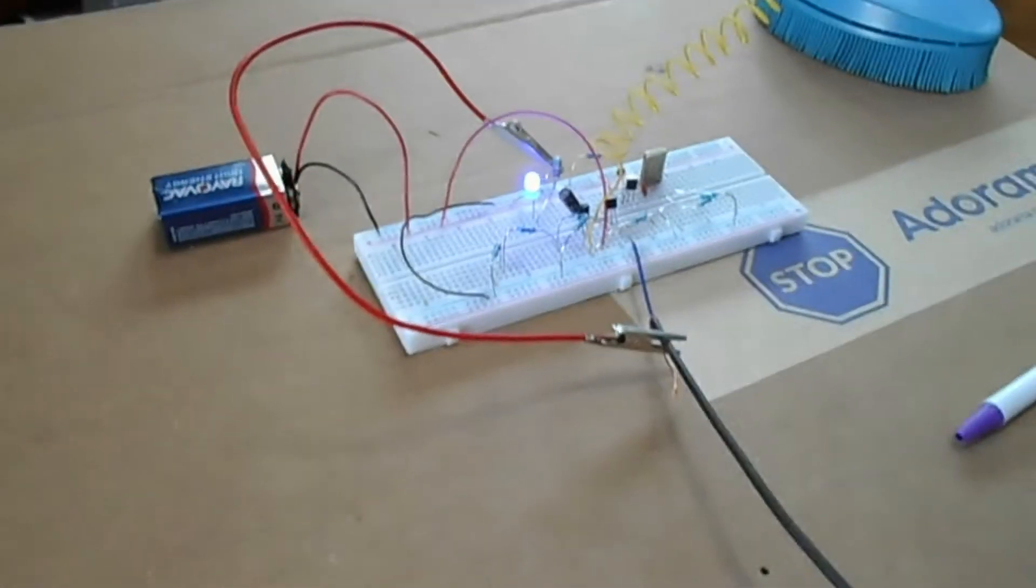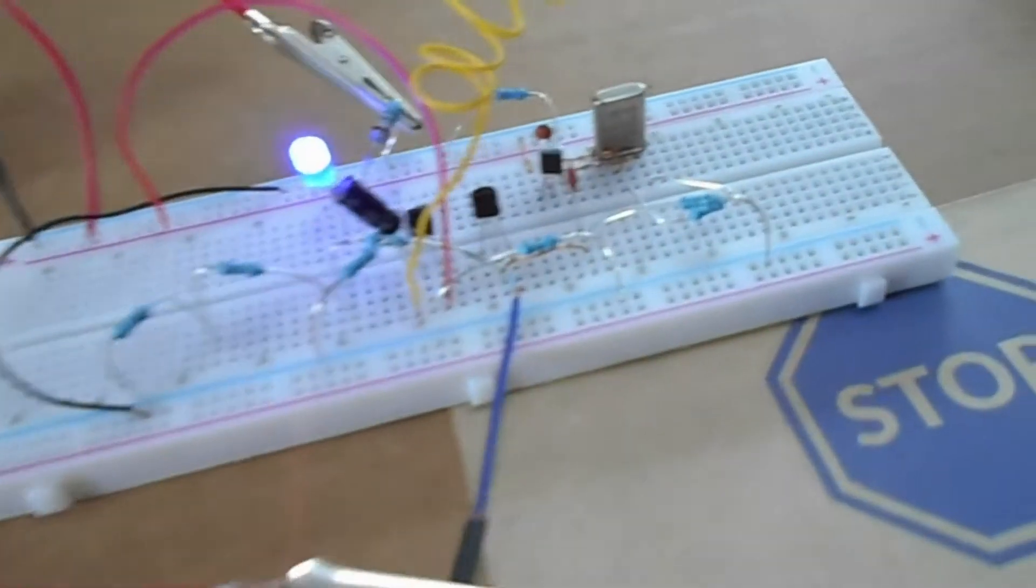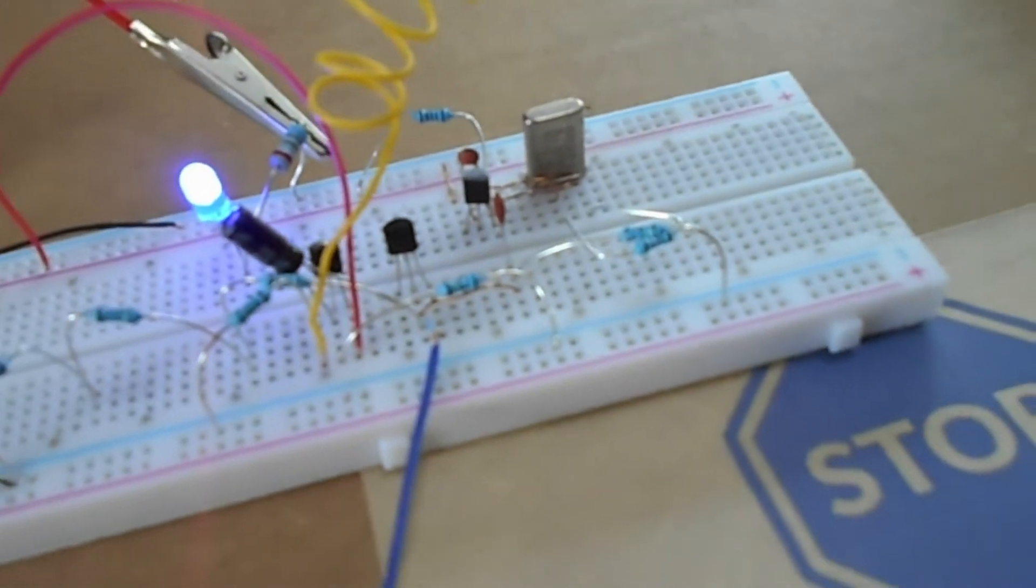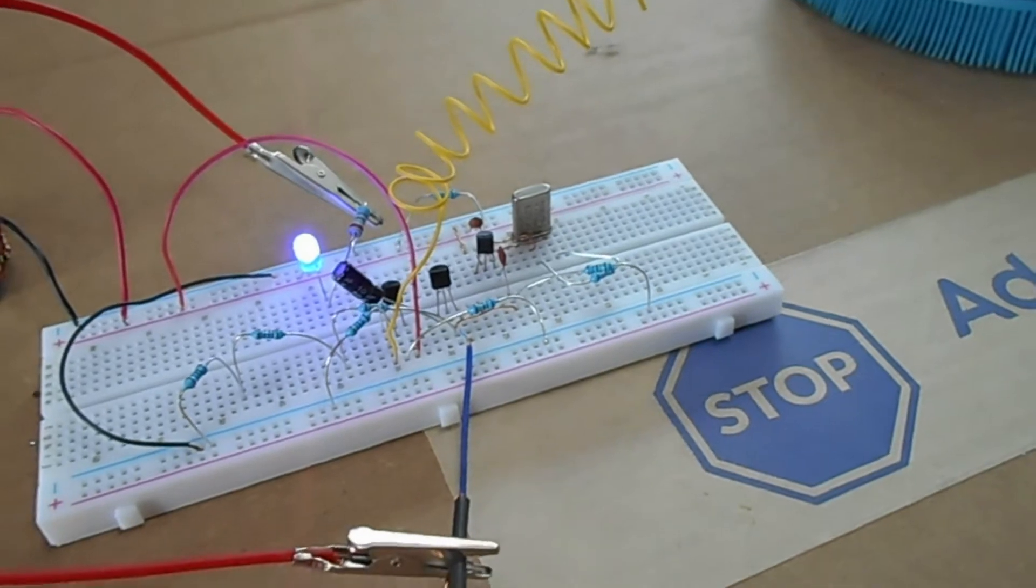So basically it's a very basic bare-bones AM transmitter that's based off of a two-pin crystal here. If I want to change my frequency, I have to pull the crystal out and put a different one in.